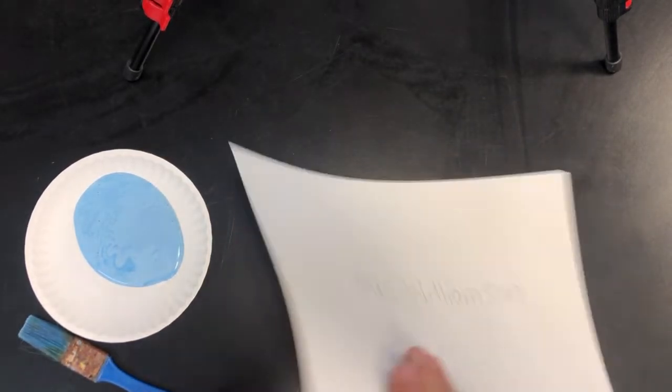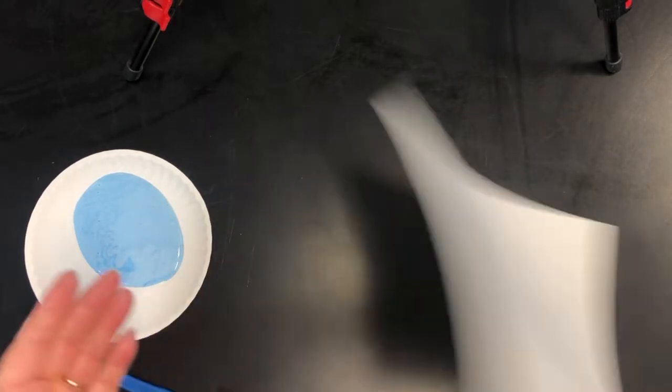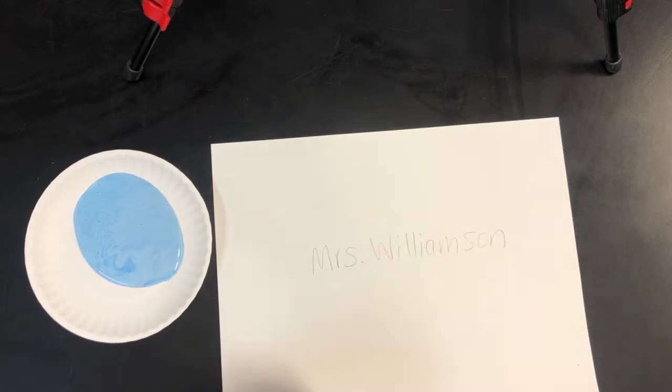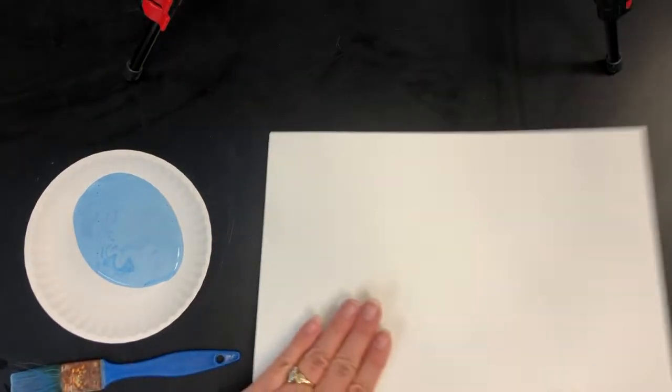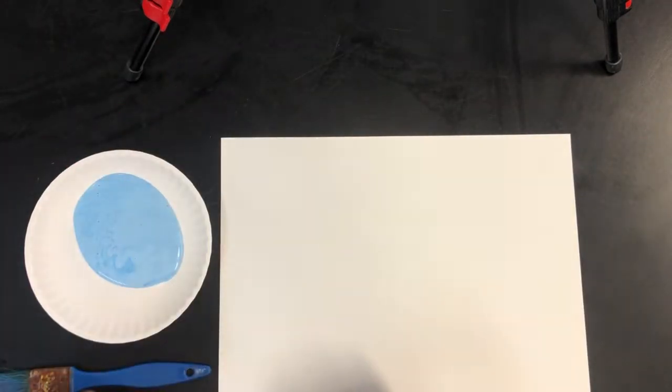What you're gonna do is flip it over. I don't want to see the name. We're not gonna put paint on the name. We're not gonna go like this. We're not gonna cover up the name. That wouldn't make any sense. So we're gonna turn it over to the beautiful white side of the paper.